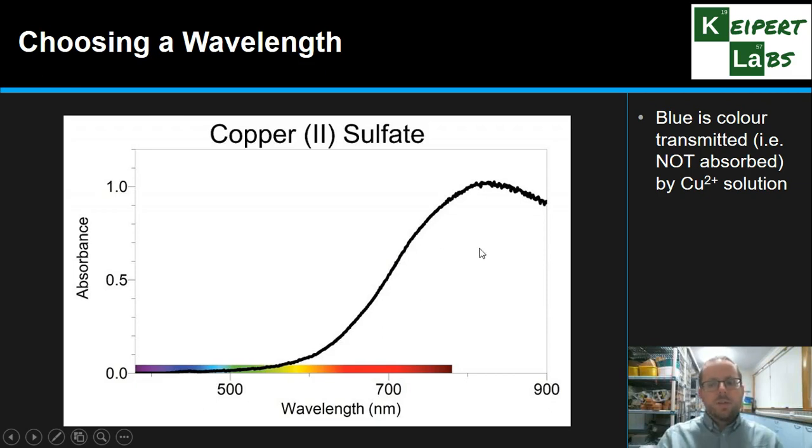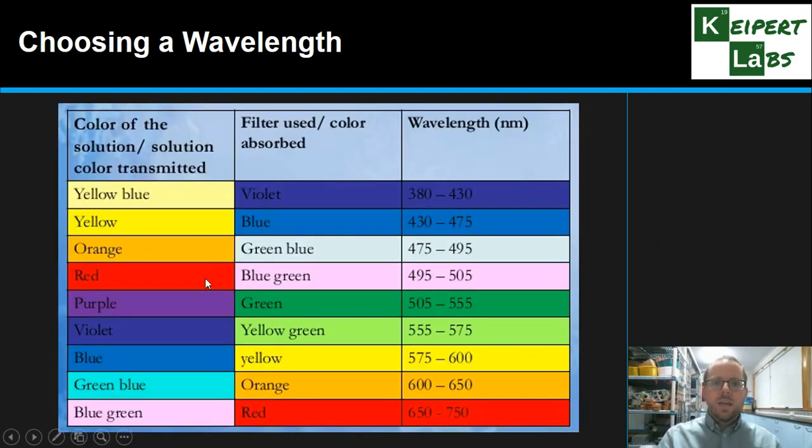And so then what that means is that if we want to choose a wavelength that it's going to absorb, we need to choose the complementary color. The complementary color is the one that is absorbed at the highest level. So say for example our copper solution, if we look at our absorbance, we can see that the highest absorbance comes from the red end and beyond the red end of our visible spectrum. It's not the blue end because that's why it's blue in color. So we need to be picking a wavelength up this end of our spectrum for our copper sulfate to absorb. Because the blue is the color that's transmitted not absorbed by our copper solution. So if we picked a red light then we would be able to actually detect its absorbance much more accurately and it would be a much more valid way to do it. And so here we can see, based on the color of the solution or the thing that we're looking at, then we can use either we can nominate a color or we can use a filter to actually select for that color and these are the wavelength ranges that those colors correspond to. So each of these is complementary on a color wheel. It's something to keep in mind.